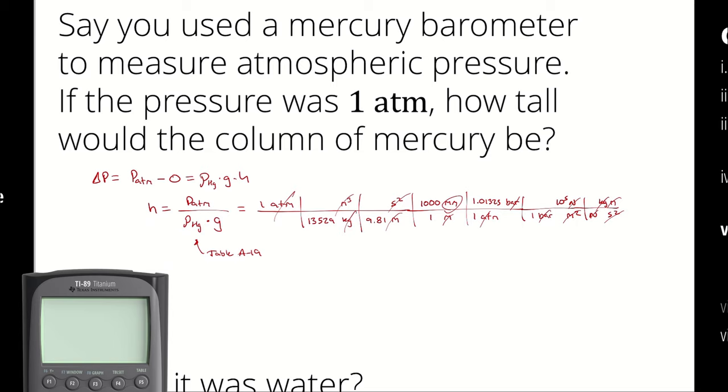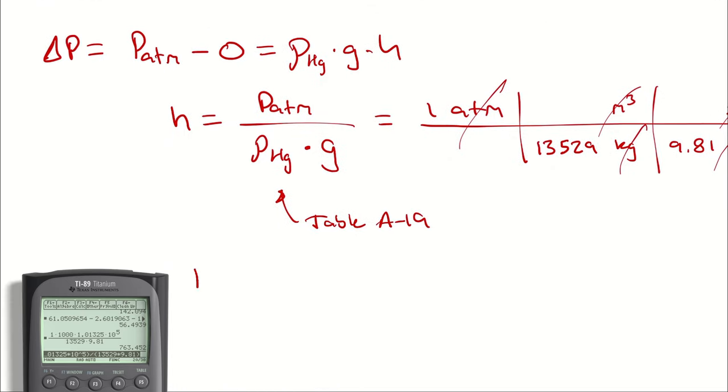So, with a little help from my calculator, I can say 1 times 1,000 times 1.01325 times 10 to the fifth divided by 13,529 times 9.81 will give me the height of the column of mercury in millimeters. So, it would be about 760 millimeters tall.